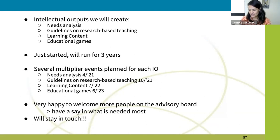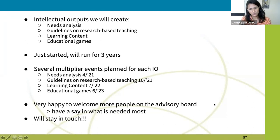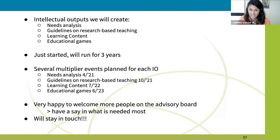We are going to create intellectual outputs. First, we'll do a needs analysis — we've already talked to students and industry, but we want to do a very thorough needs analysis to know what we should teach. Then we want to create guidelines on how to do research-based teaching: how to involve students in your research, how to use research infrastructures in your teaching. We will also work on creating learning content for online learning, and the last thing is using educational games to bring the learning content across. We've just started, so we're very fresh and very open to collaborations and ideas, and we have several multiplier events planned for each intellectual output.